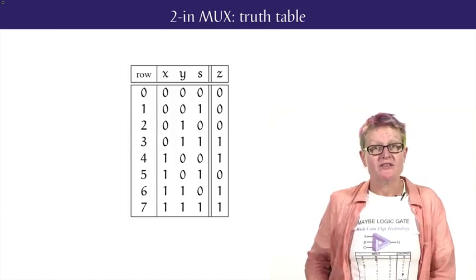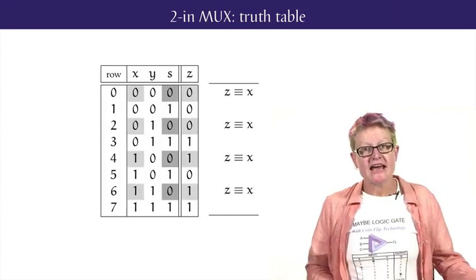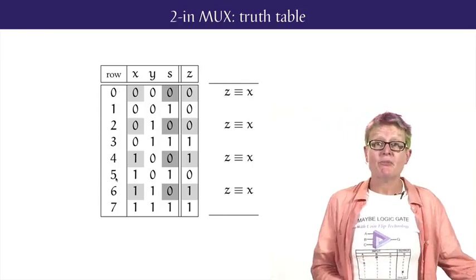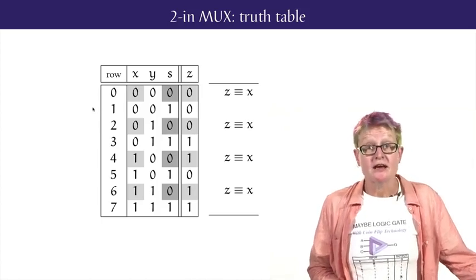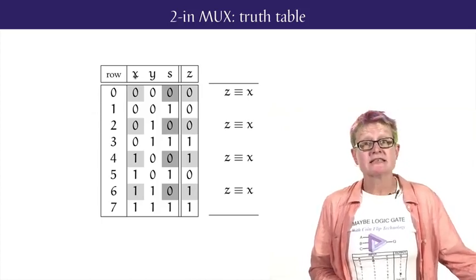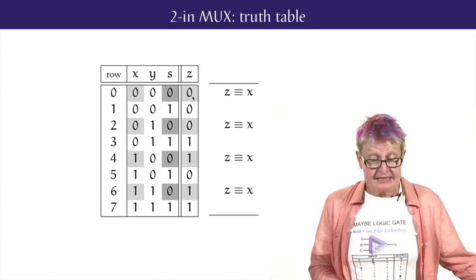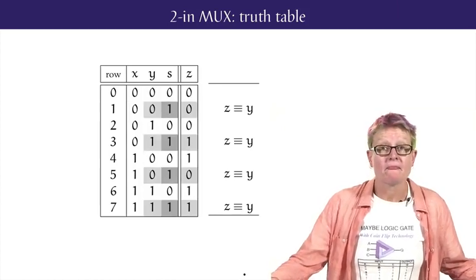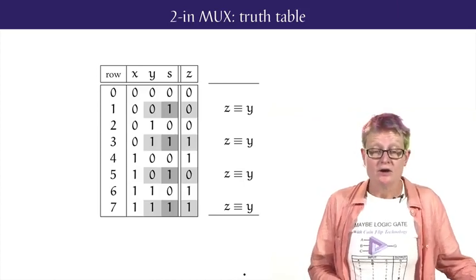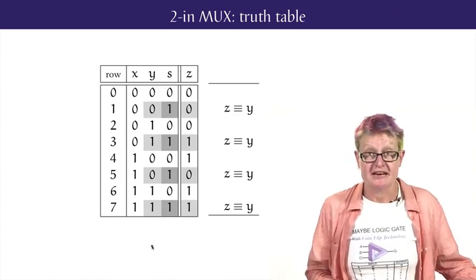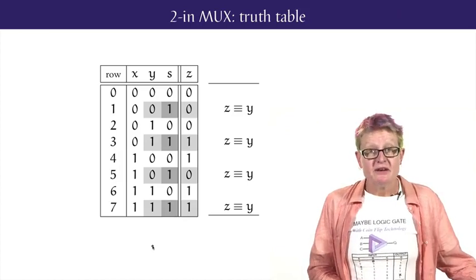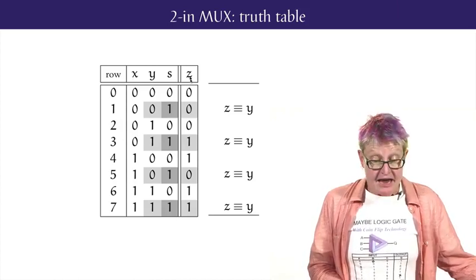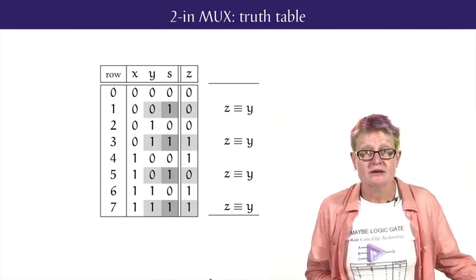The truth table for our 2-to-1 MUX system has 8 rows, numbered 0 to 7. We break into two cases depending on the value of the select input S. When the select input S is 0, on rows 0, 2, 4 and 6, the bit value of the first data input X is passed through to output Z, so we get Z is 0, 0, 1 and 1 on these four rows — the same as X. The other case is when the select input S is 1, on rows 1, 3, 5 and 7. In this case, the bit value of the second data input Y is passed through to output Z, so we get Z is 0, 1, 0, 1 on these four rows — the same as Y.